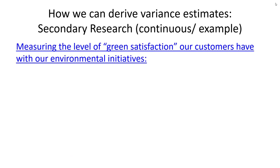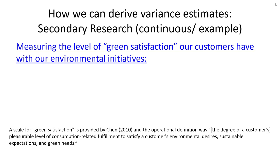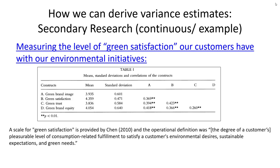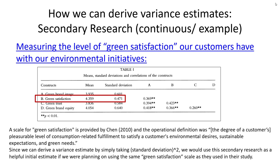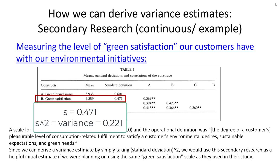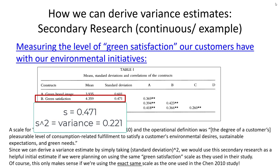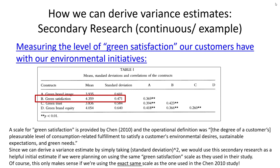For a continuous variable example, imagine we want to measure 'green satisfaction' — defined by Chen (2010) as the degree of a customer's pleasurable level of fulfillment satisfying environmental desires, sustainable expectations, and green needs. That study's summary table reported the average and standard deviation for the green satisfaction scale. Simply squaring the standard deviation gives us a variance estimate we can use in our own study, assuming we use the exact same wording as the Chen scale.